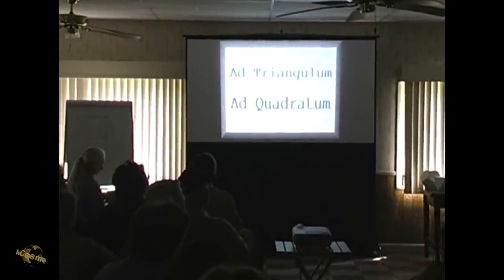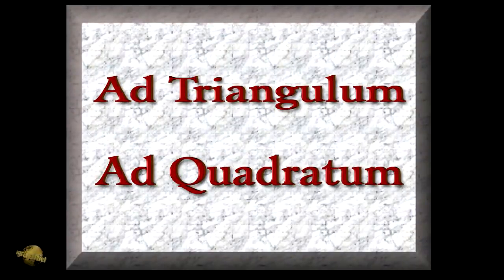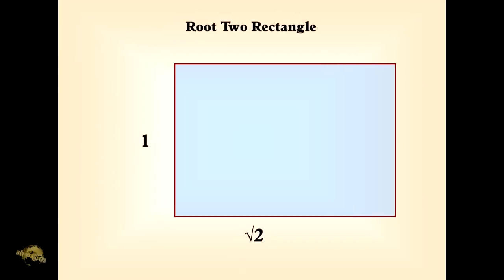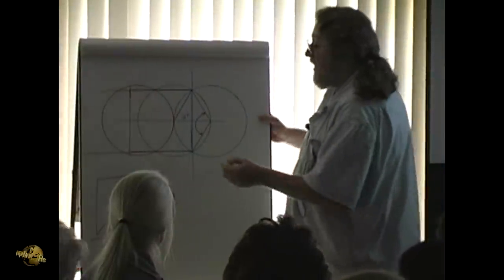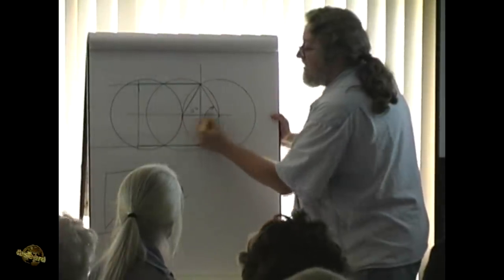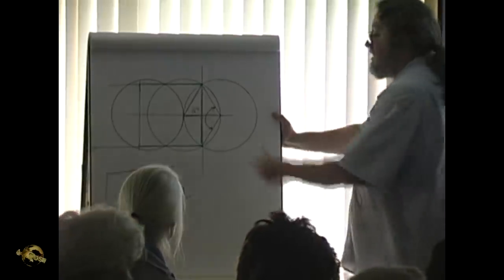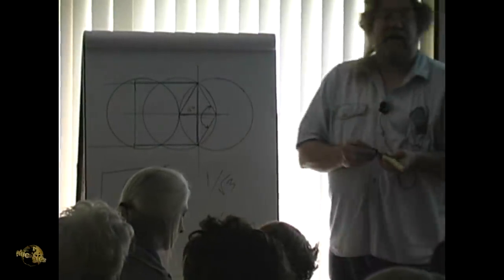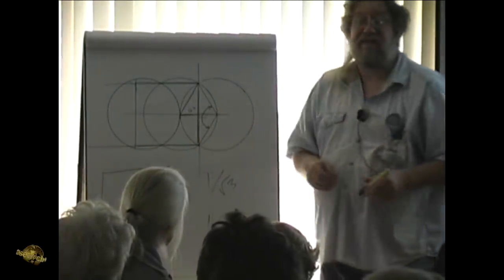There were two systems of Masonic geometry that were both generated out of the vesica. The ad quadratum basically started with a square. There's a basic numerical relationship that pertains to the square — the relationship between the square and its diagonal. If the side of the square is one, the diagonal becomes the square root of two, one of the mystic numbers that doesn't terminate or repeat. Likewise, in the vesica, if we take the width as one, the length becomes the square root of three. So we have one to the square root of three in the vesica, and one to the square root of two in the square. This is the basis of the whole system of dynamic symmetry.